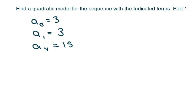And so our model is going to be a sub n equals a n squared plus b n plus c. That's how we're going to set up our model.